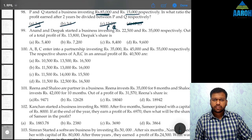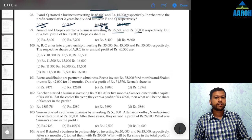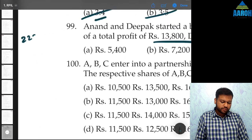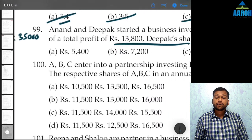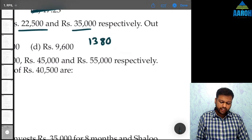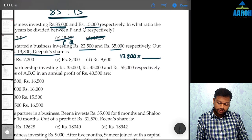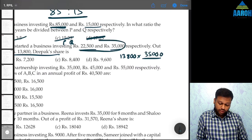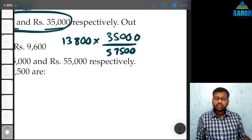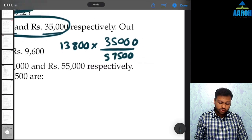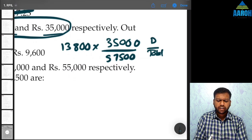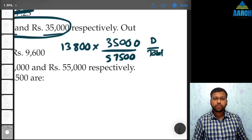Question 99. Anand and Deepak started a business investing 22,500 and 35,000 respectively. Out of a total profit of 13,800, Deepak's share is how much? Anand and Deepak's ratio of capital is 22,500:35,000. The total of these two is 22,500 + 35,000 = 57,500. Out of 57,500, Deepak's share is 35,000. So out of 13,800, Deepak's share is 13,800 × 35,000 ÷ 57,500 = 8,400, option C.